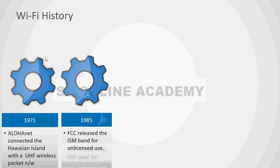Then after almost a decade, in 1985, the FCC — Federal Communication Commission, an independent US government agency — released the ISM band for unlicensed use. ISM stands for Industrial, Scientific and Medical radio band. This is unlicensed spectrum in the 2.4 GHz frequency.